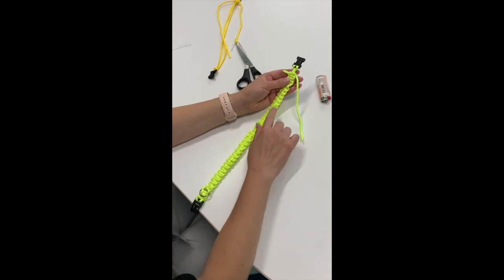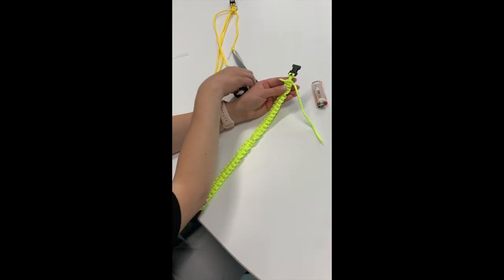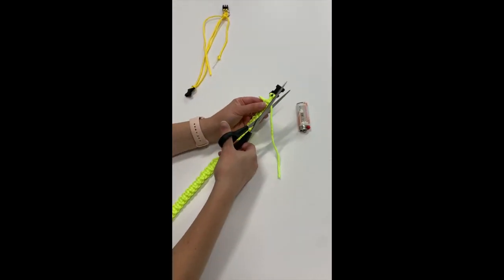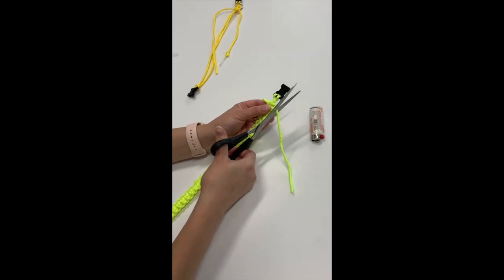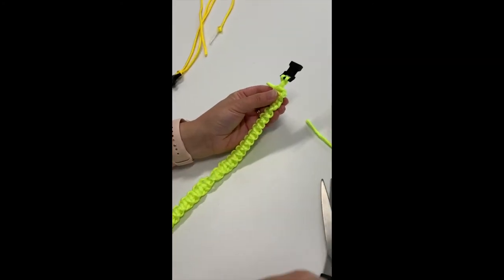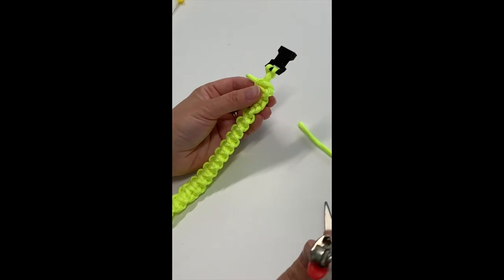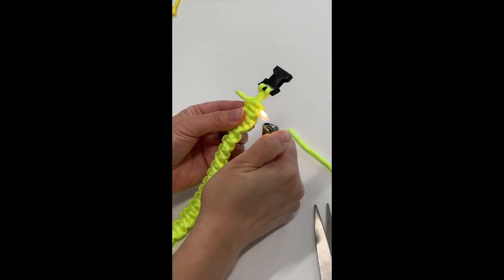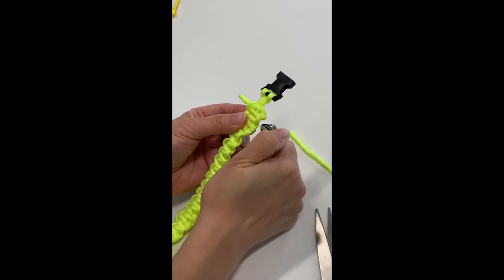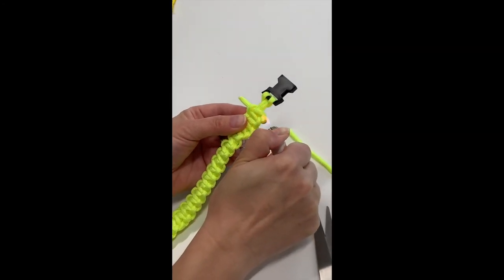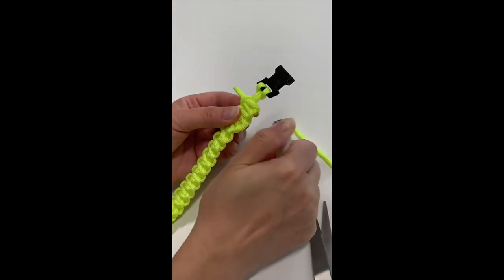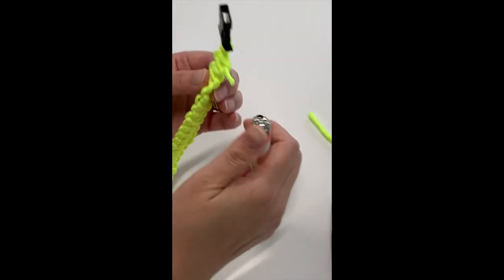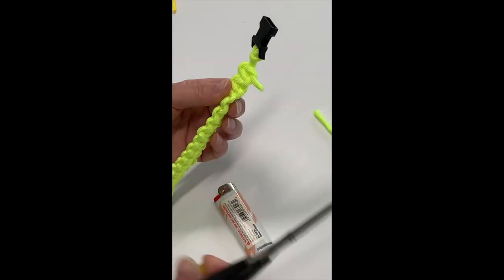Once you're done and you're at the end of your collar, you're going to trim the excess paracord and get your lighter. You want to be careful with this. And you're going to burn the ends of the paracord. This will prevent it from fraying and it'll hold it in place. So you want to do that for both ends. And trim this a little more.